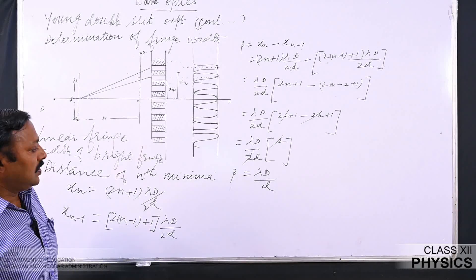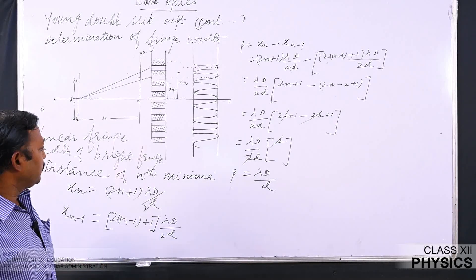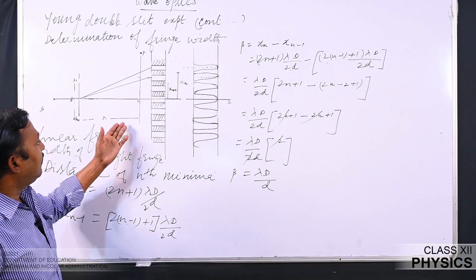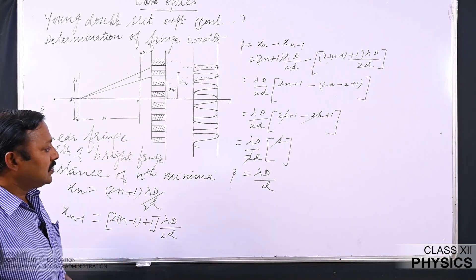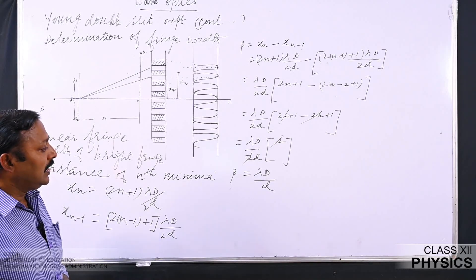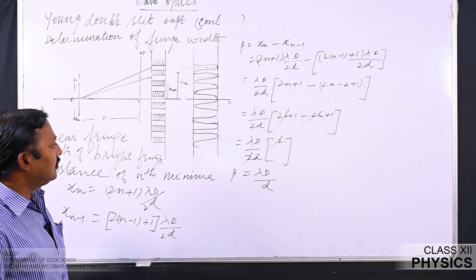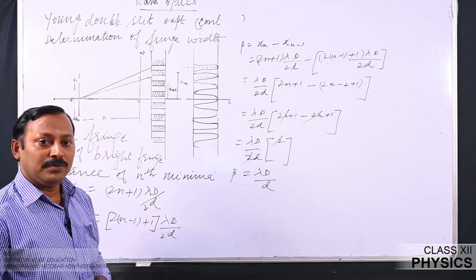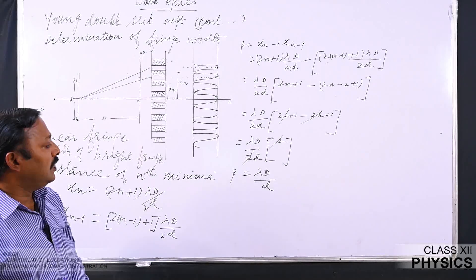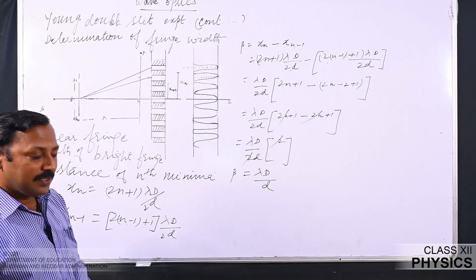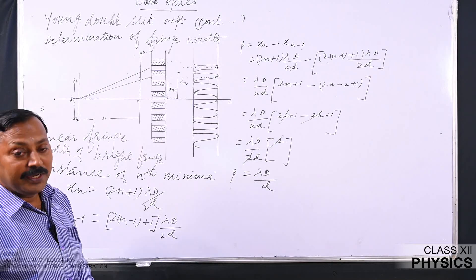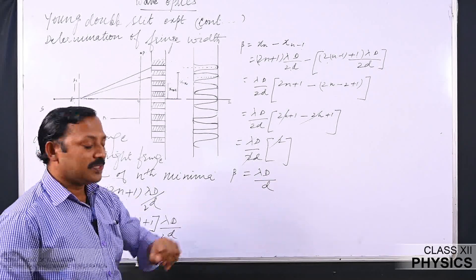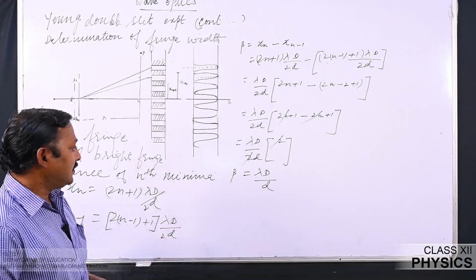In the previous case we saw that the fringe width of dark fringes also comes out to be lambda·D/d. So in the case of interference, all the fringes — including the central fringe — will have the same fringe width given by beta = lambda·D/d. This fringe width depends upon lambda, D, and small d, as we already discussed.